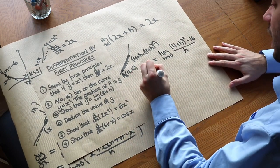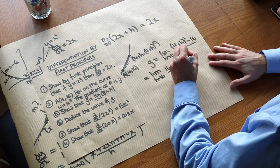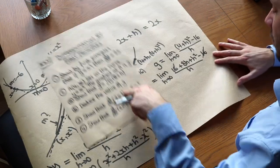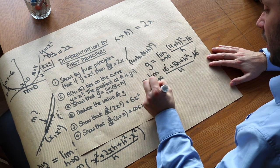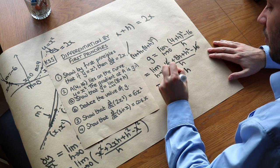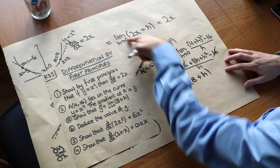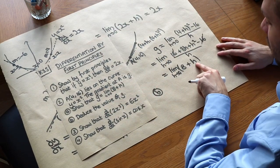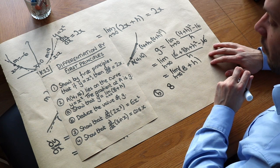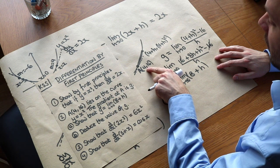Then we just expand out and simplify as before. That gives us 16 plus 8h plus h squared minus 16 over h. The 16s cancel, just like the x squared terms cancelled before. Then 8h over h equals 8, plus h squared over h which is h. And the limit of that as h tends towards zero is exactly what we wanted. In part b, deducing the value of g: as h tends towards zero that term disappears, so we just get 8. The gradient of y equals x squared when x is 4 is 8, which we expect because the gradient is double the x value, and double 4 is 8.